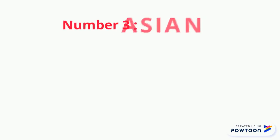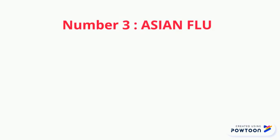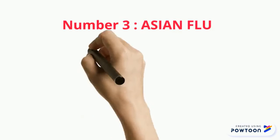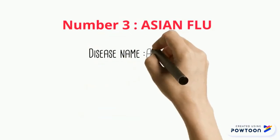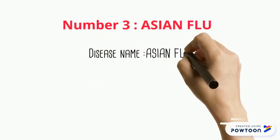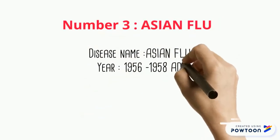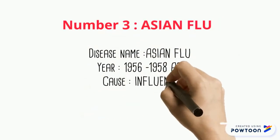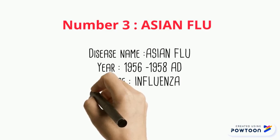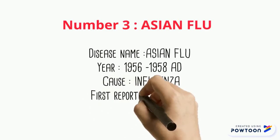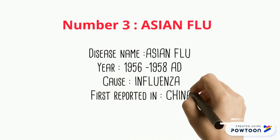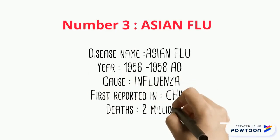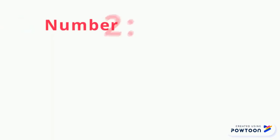Number 3 is the Asian Flu, a pandemic outbreak of influenza A of the H2N2 subtype that originated in China in 1956 and lasted until 1958. In its two years, the Asian Flu traveled from China to Singapore and Hong Kong.